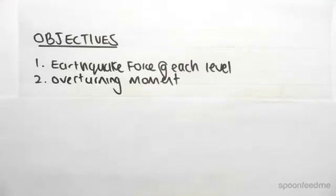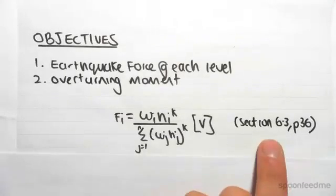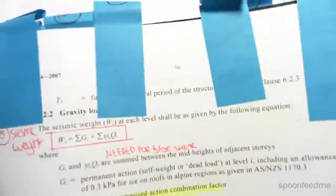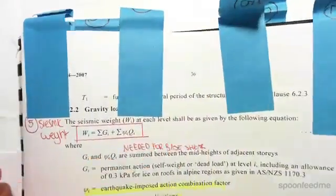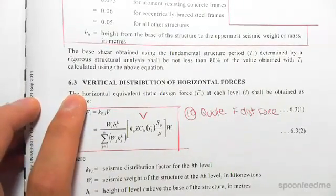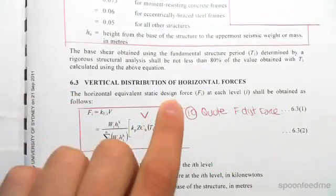So the first thing we want to do is just find out the formula. Now this is taken from section 6.3 on page 36. See if I show this to you. So we're on page 36, section 6.3 down the bottom, vertical distribution of horizontal forces.